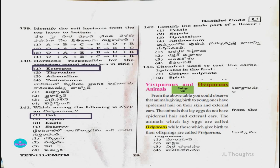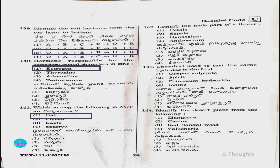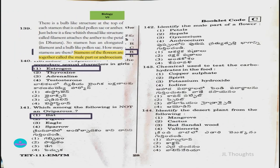Among the options — bat, pigeon, eagle, sparrow — the answer is bat, as it does not lay eggs and is therefore not oviparous. Question number 142: Identify the male part of the flower. Options: petal, sepals, gynoecium, androecium. From the class 7 biology textbook, the stamens of the flower together are called the male part or androecium. So the answer is option four, androecium.